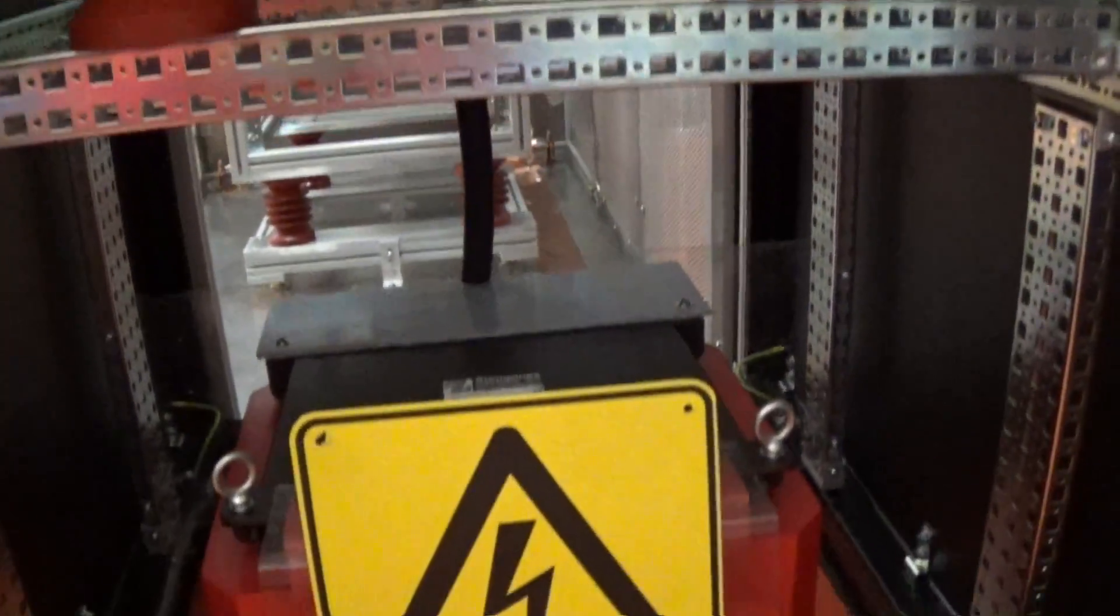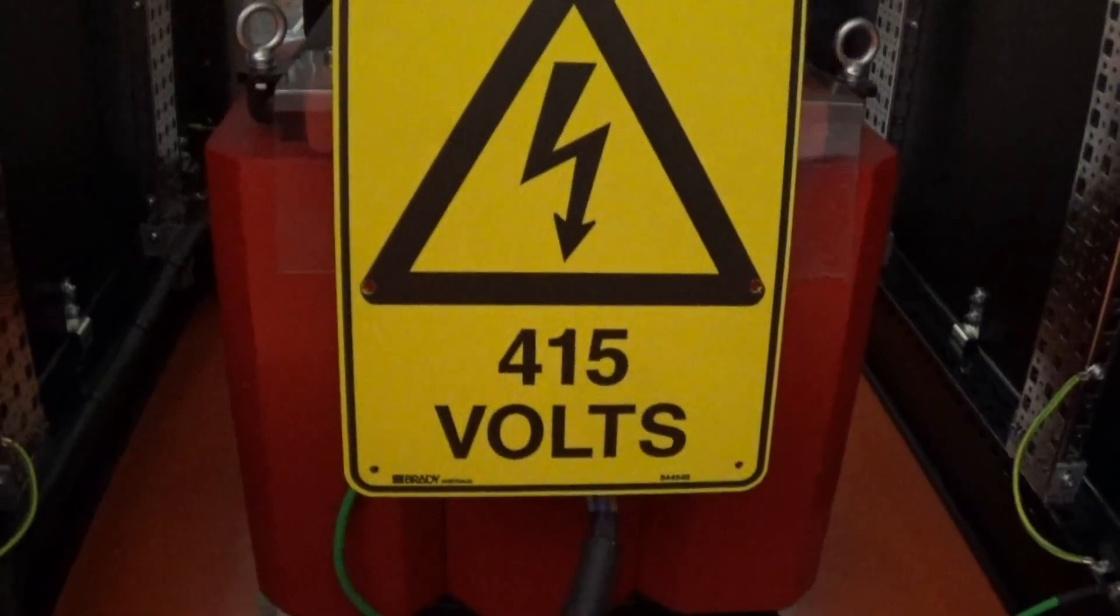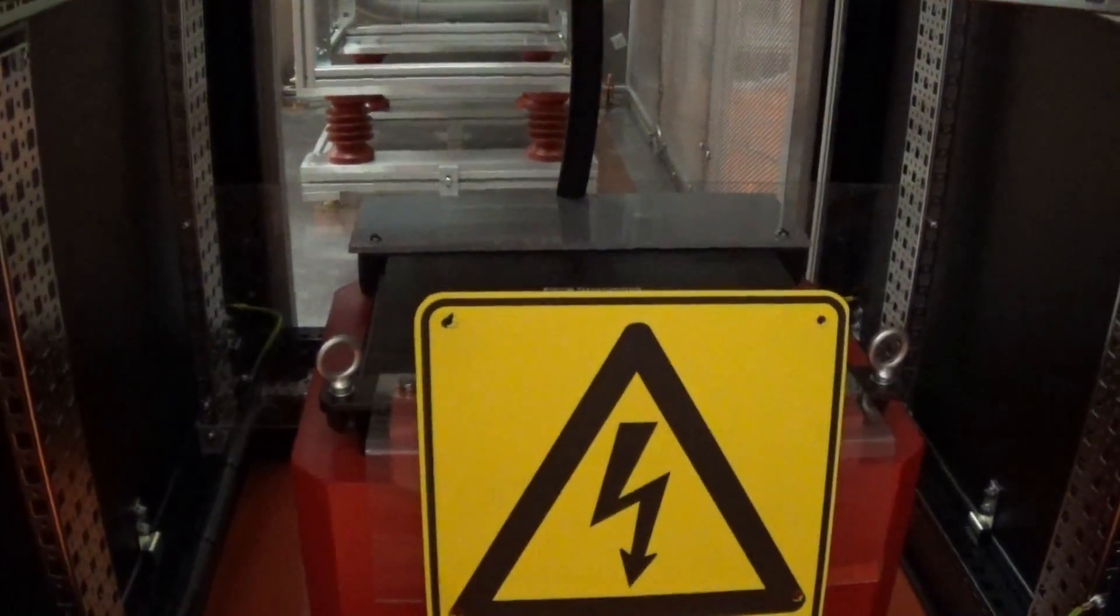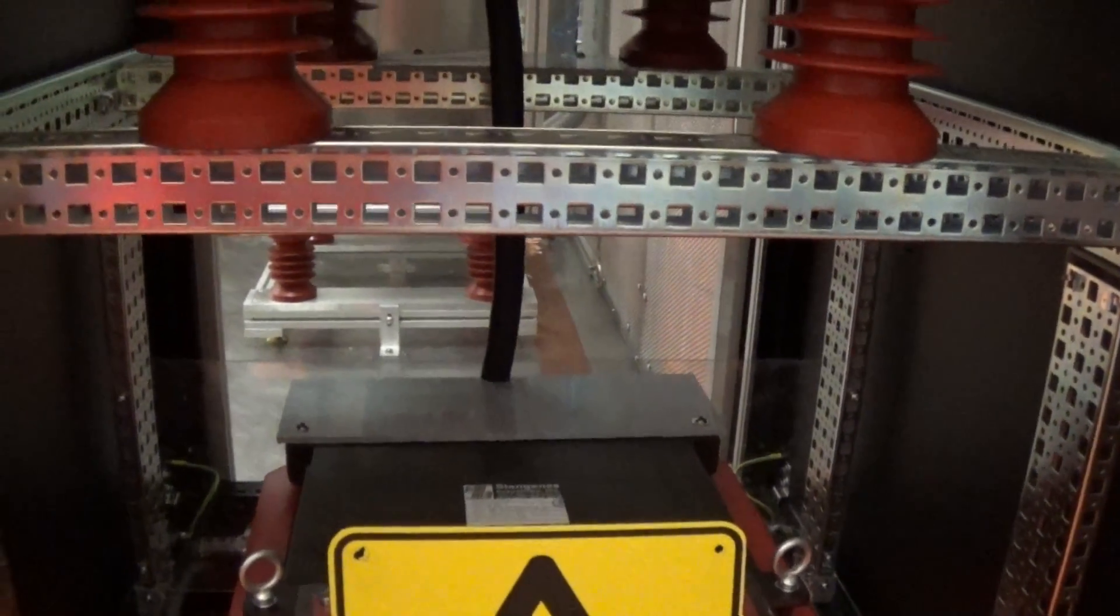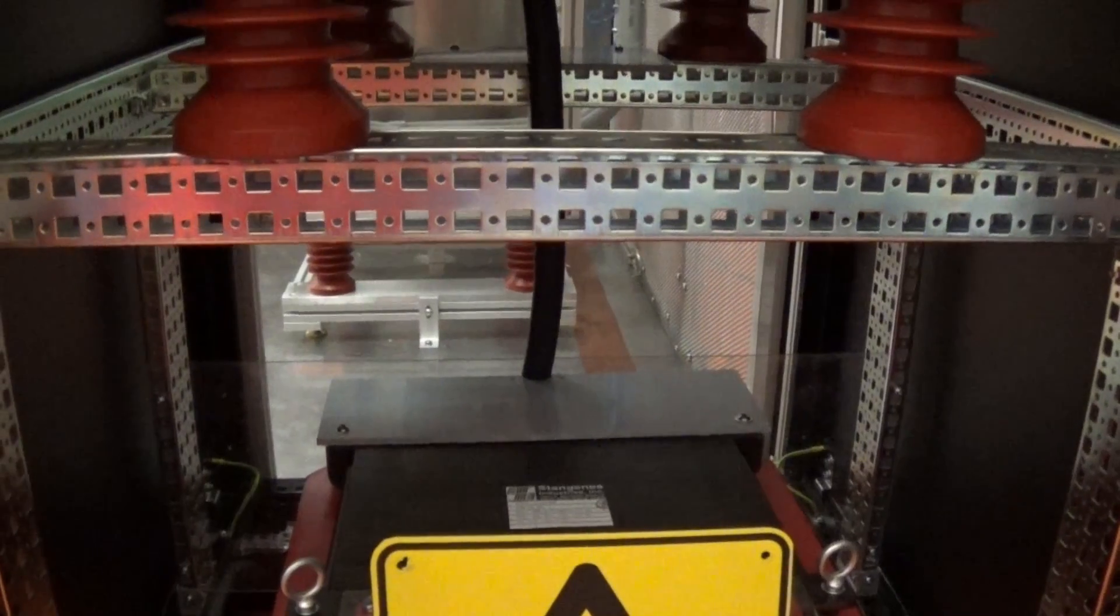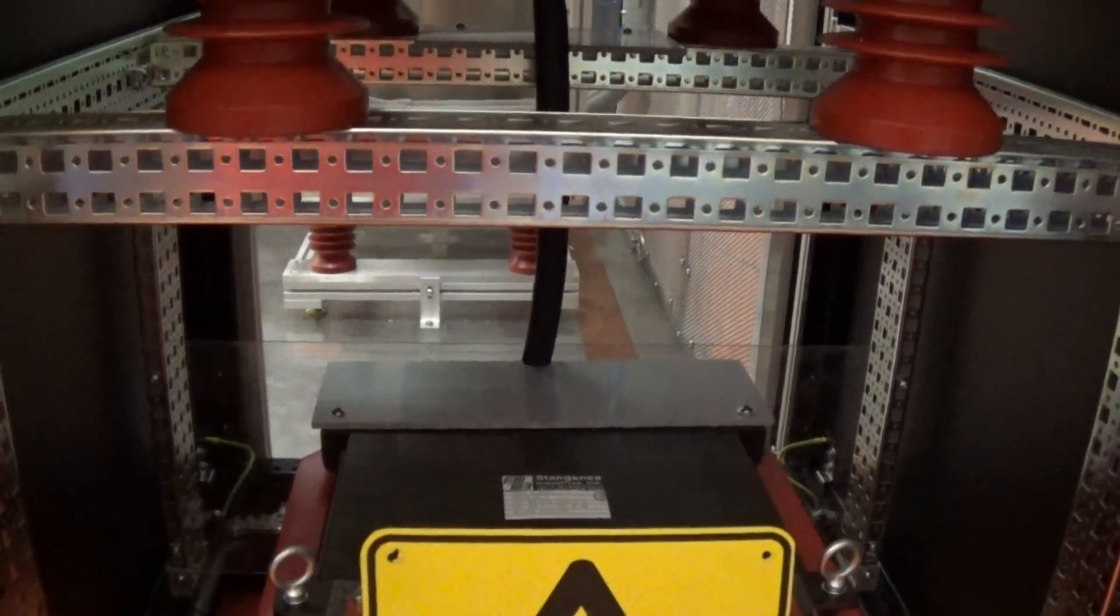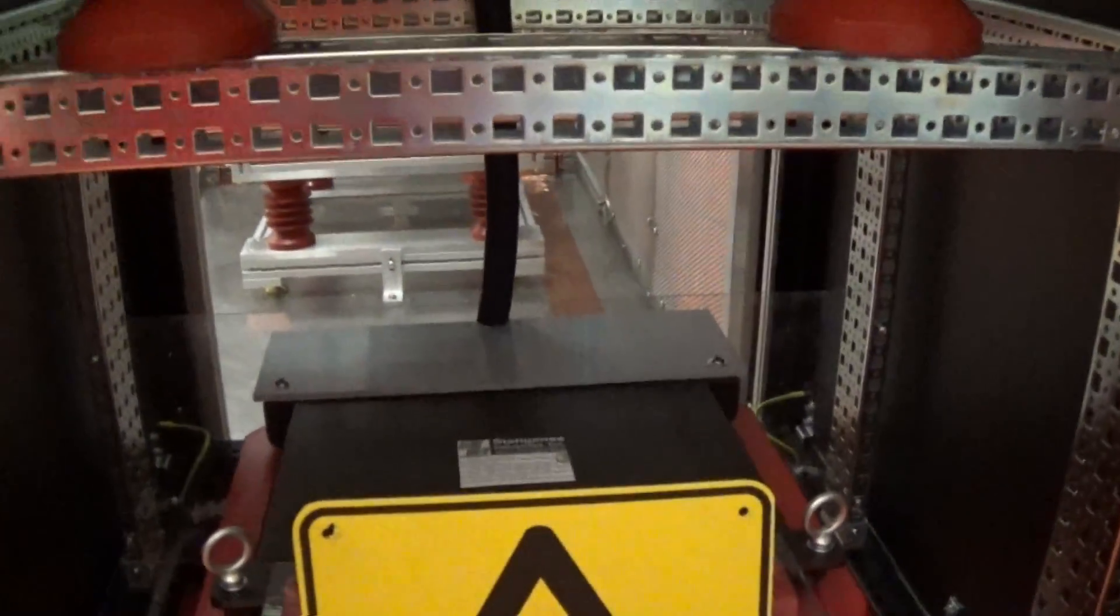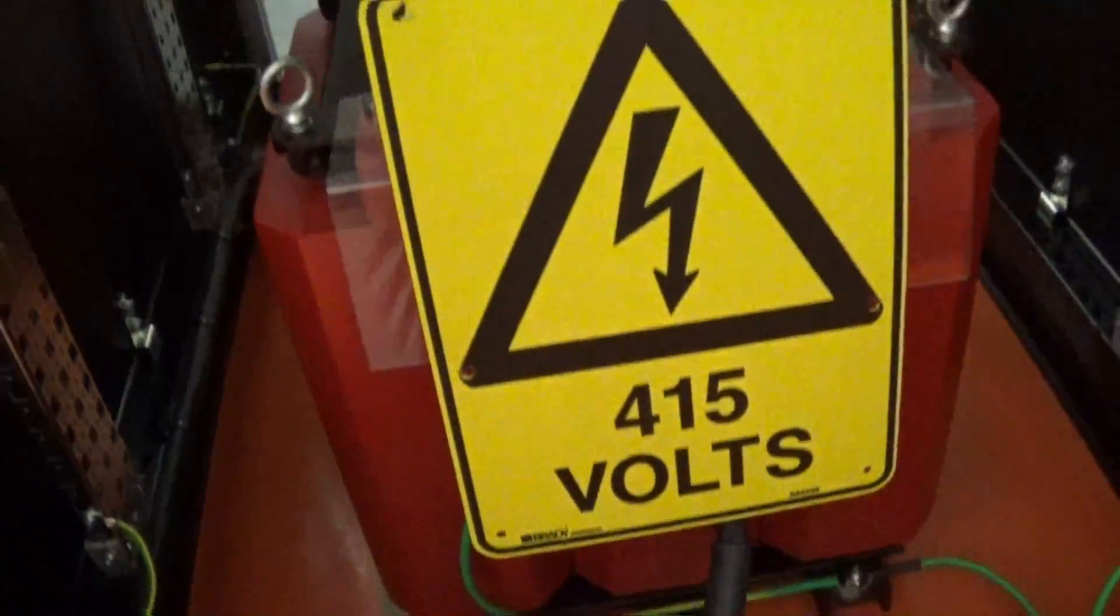And below all of this, which is hard to see behind the sign here, but this red object is an isolation transformer. So we get 400 volts three-phase coming into here. And then you get 400 volts three-phase coming out of the transformer. But you can have the primary and the secondary of the transformer isolated by up to 40,000 volts.